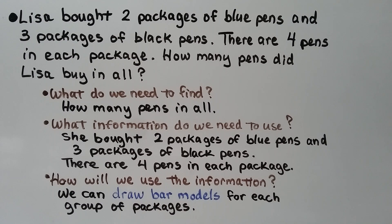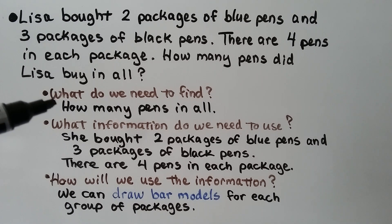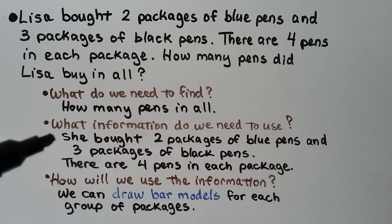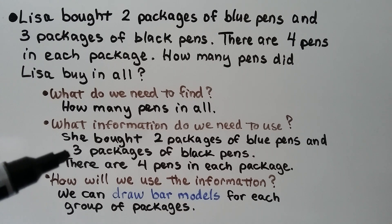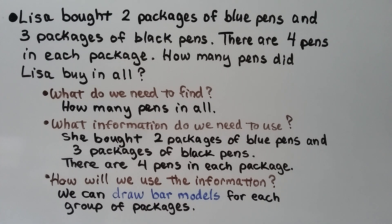Lisa bought two packages of blue pens and three packages of black pens. There are four pens in each package. How many pens did Lisa buy in all? We need to find how many pens in all. She bought two packages of blue pens and three packages of black pens, and there are four pens in each package. We can draw bar models for each group of packages.